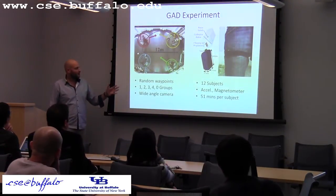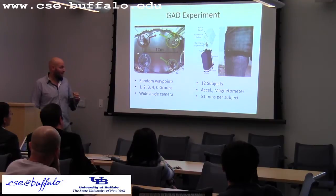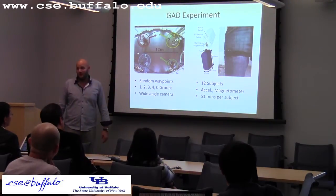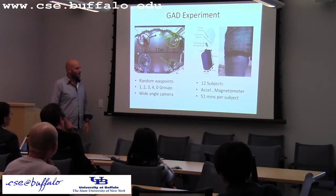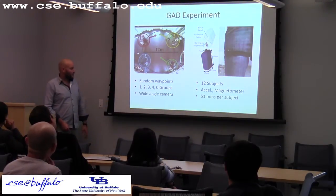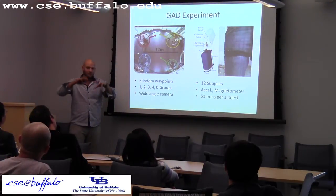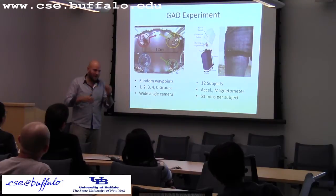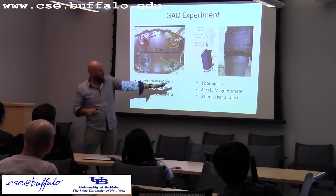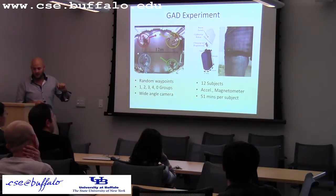This is the experiment we did to evaluate the algorithm — it was done at ETH, using a dataset that had been created but never used. There's a circle with 12 points set up around it, each with a numbered stand. We split the group into different configurations; each subgroup had a leader with a list of numbers to walk out. There were 12 subjects in total, each with an Android monitoring device sampling accelerometer and compass, giving about 51 minutes of data per subject.